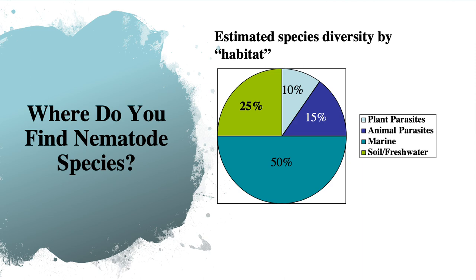Where do you find nematode species in nature? The greatest estimated species diversity of nematodes is marine, in the sediments. This is followed by terrestrial soil and freshwater nematodes, which we estimate make up about 25% of all nematode species. Parasites — both of plants and animals — make up an estimated 25% of nematodes as well.